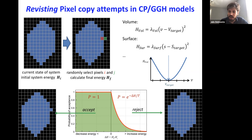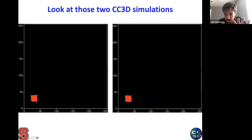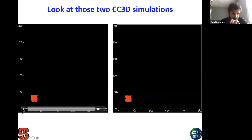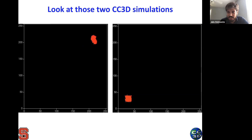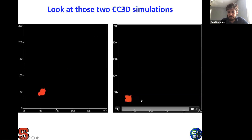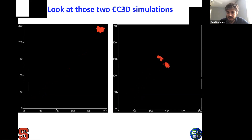To illustrate this, I want you to observe two CompCell simulations I made. I'll play one and then the other, and I want you to tell me if there's anything wrong with one of them. So let me play the first one — it's a cell moving and it wants to move along this diagonal. Now let's see the other one — it's doing the same thing but differently. Which one do you think is more realistic, the one on the left or the one on the right?